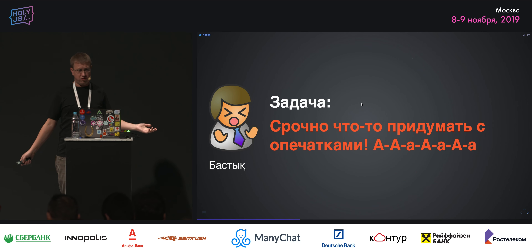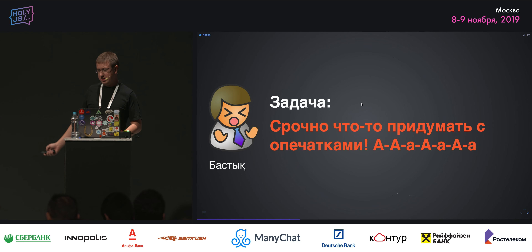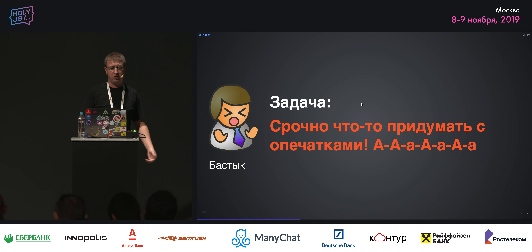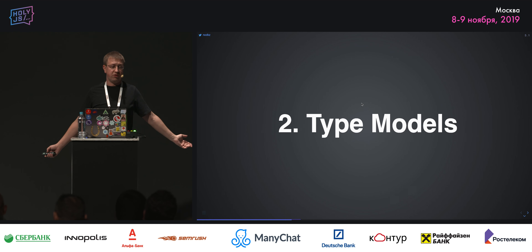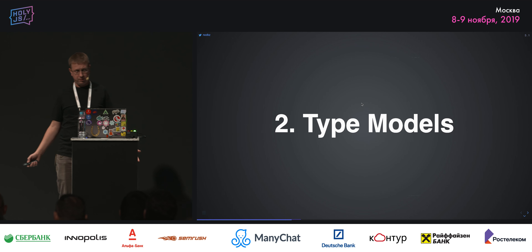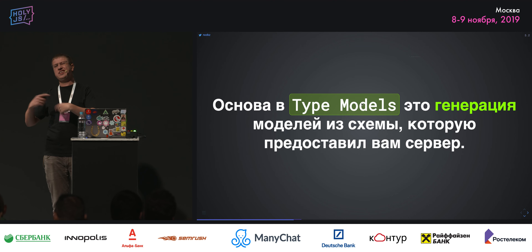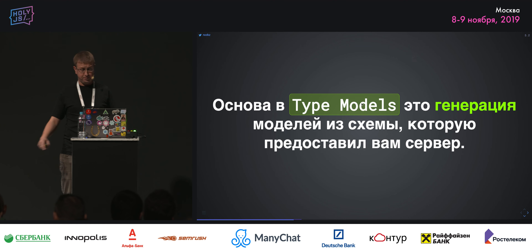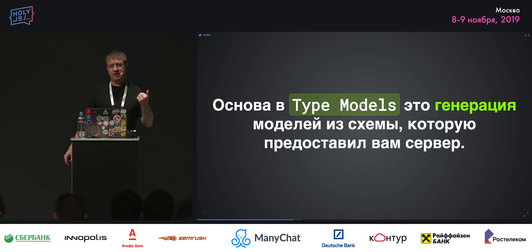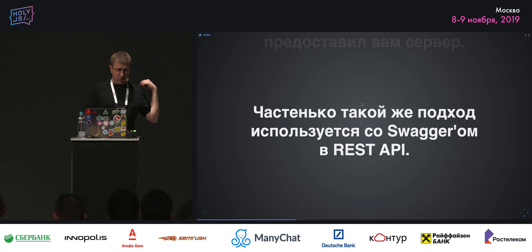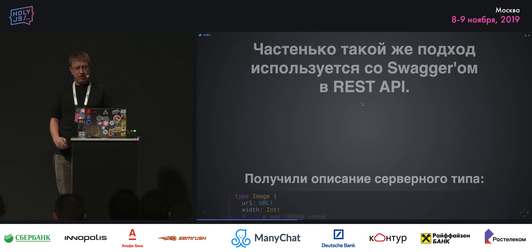После того как набрали грабли, получаем следующую задачу — что-то придумать срочно с опечатками. Конечно, type-модели — то, что в REST API уже существует давно, что используется со Swagger. Со Swagger — это генерация из серверной схемы всех типов, всех полей, которые есть в модели. Частенько это в Swagger используется.